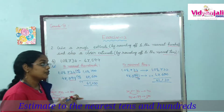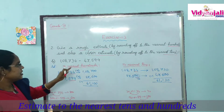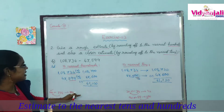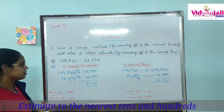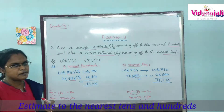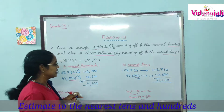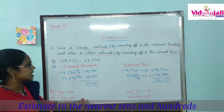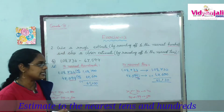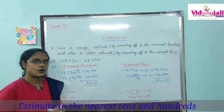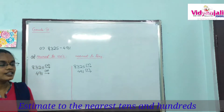Now observe both answers — nearest hundreds and nearest tens. There is a minor difference between the two estimates. This is because rounding to hundreds and rounding to tens give slightly different results. Let us try the third part.